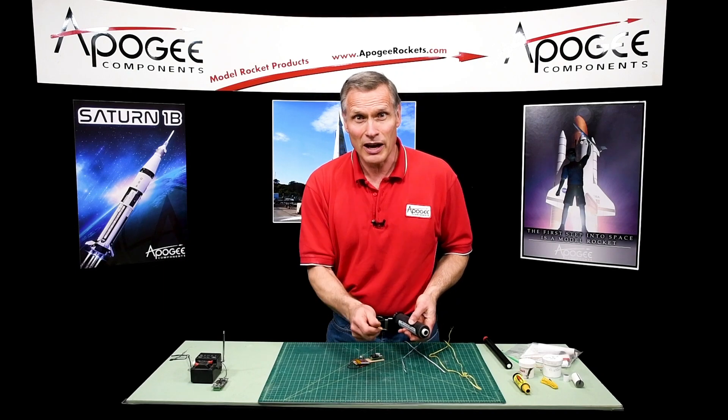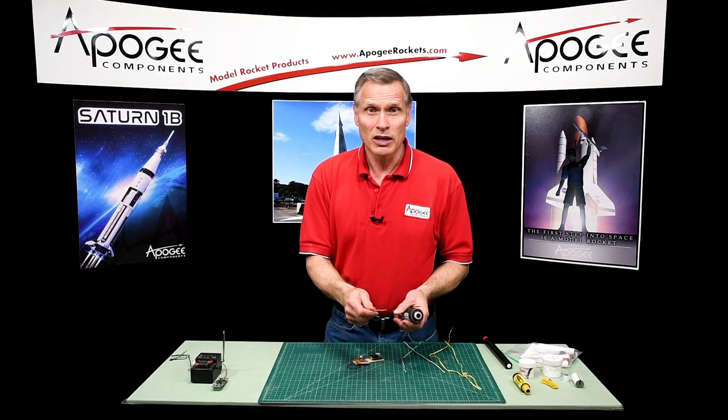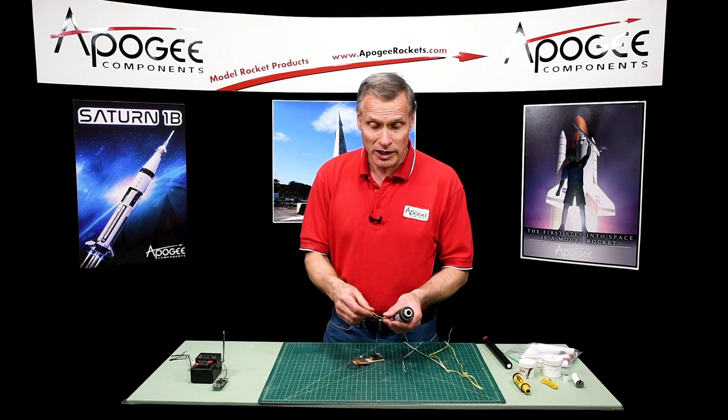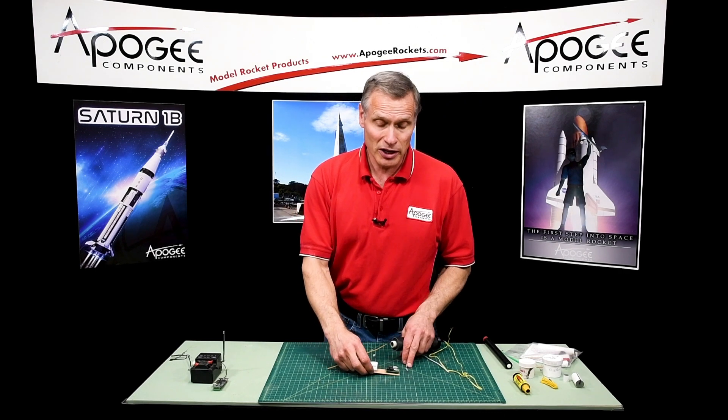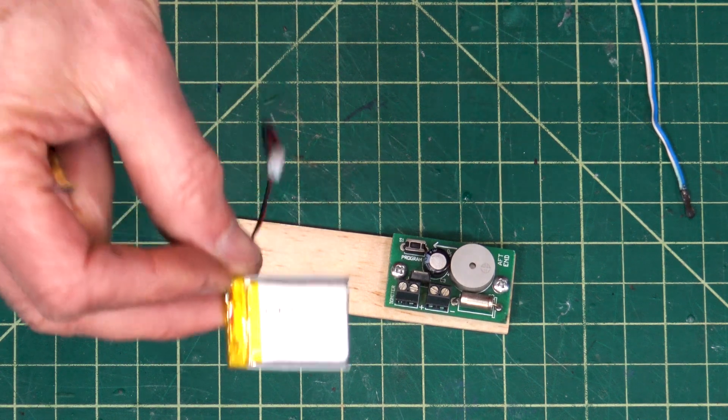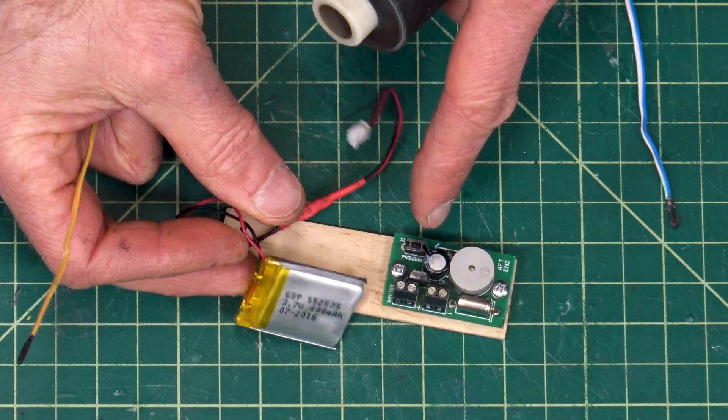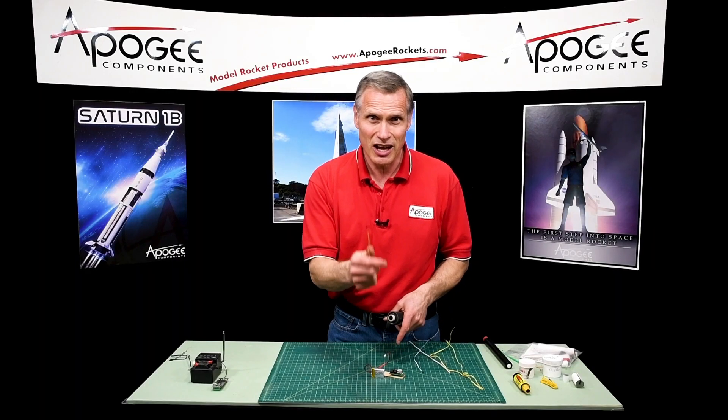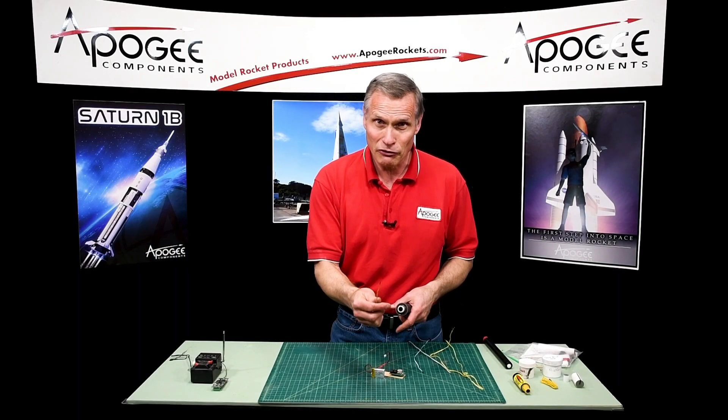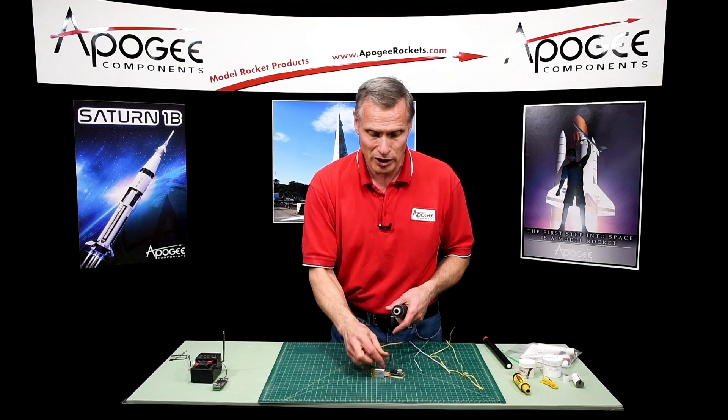These take a lot of current to ignite so you're going to need like a 12 volt battery to ignite them. But when you're flying two stage rockets you're probably only going to have like a 3.7 volt battery or maybe a 9 volt battery available and it just doesn't have enough oomph to fire off these first fire igniters.